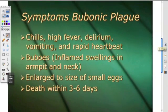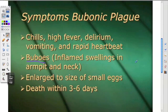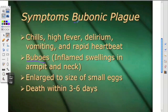The symptoms of bubonic plague are chills, high fever, delirium, vomiting, and rapid heartbeat. You would get what's called bubos, which were inflamed swellings in the armpit and neck. They enlarge to the size of small eggs, eventually they would burst, and you would experience death within three to six days.